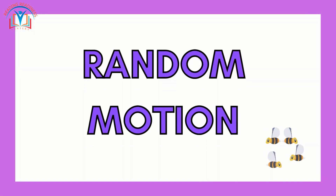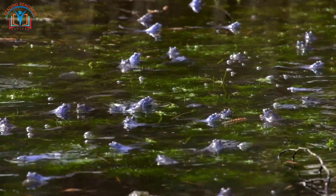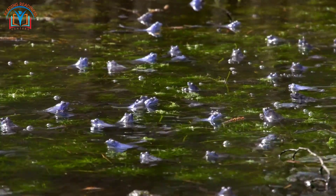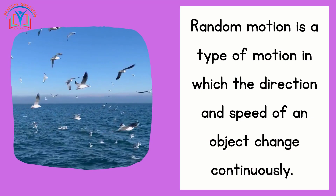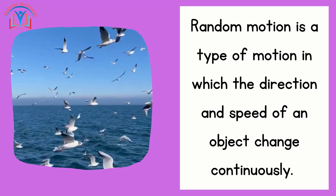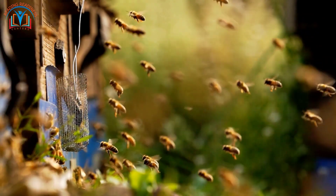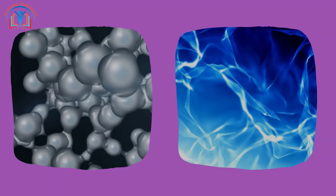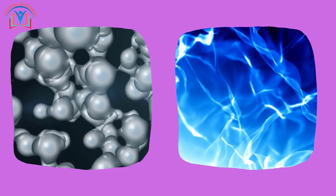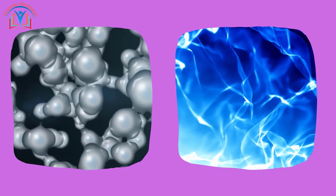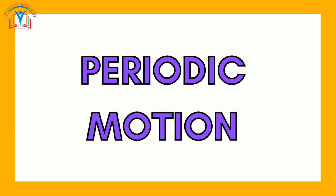Who's ready to hop into random motion? Imagine a frog jumping all around the pond — it doesn't follow a pattern, it's all over the place. That's random motion! Random motion is a type of motion in which the direction and speed of an object change continuously. It is difficult to predict and is often caused by collisions with other objects. Examples include the movement of gas molecules and the motion of smoke particles.